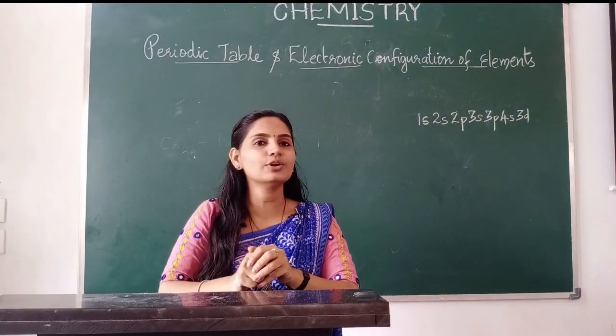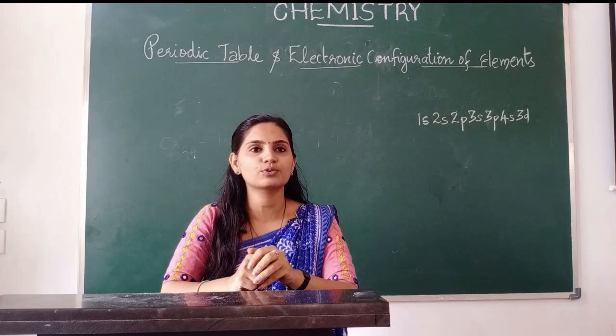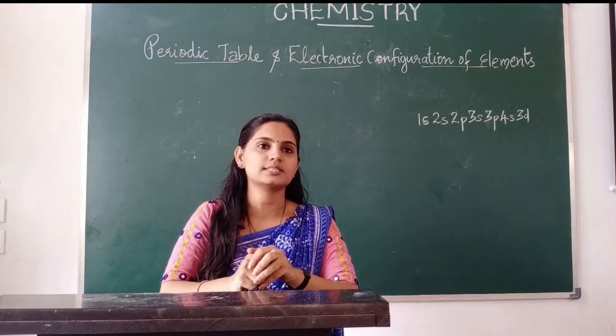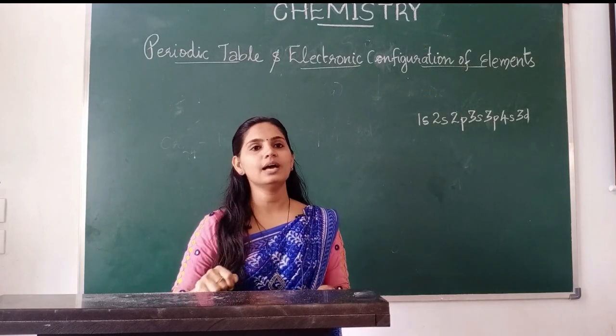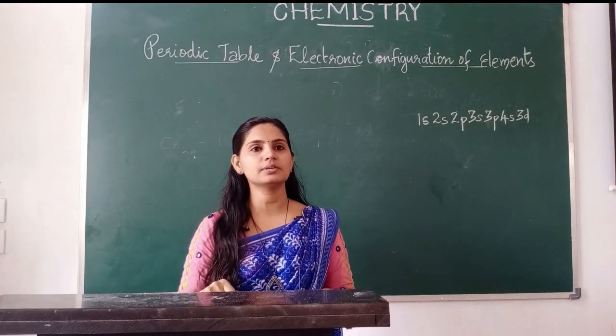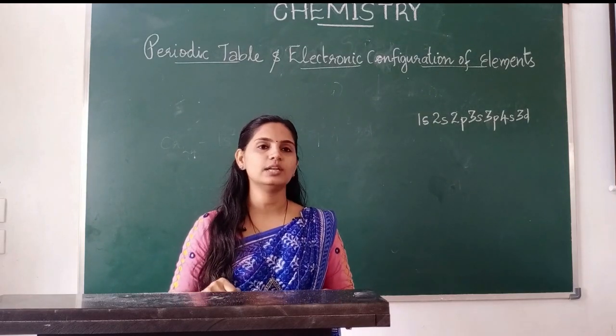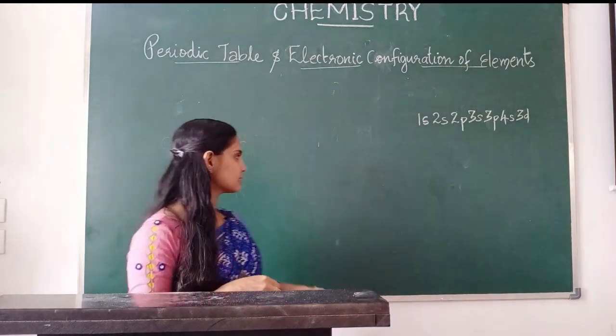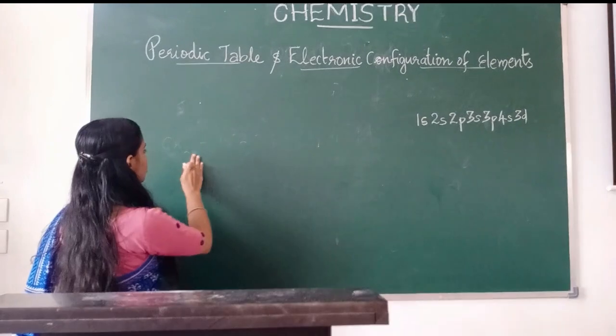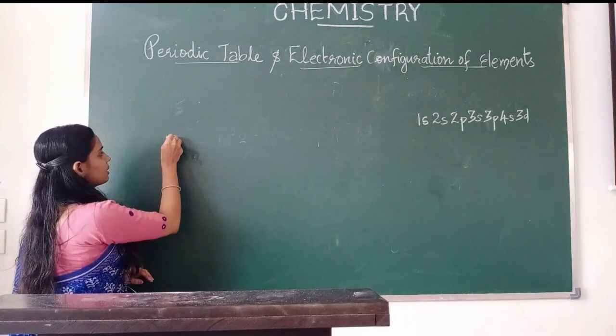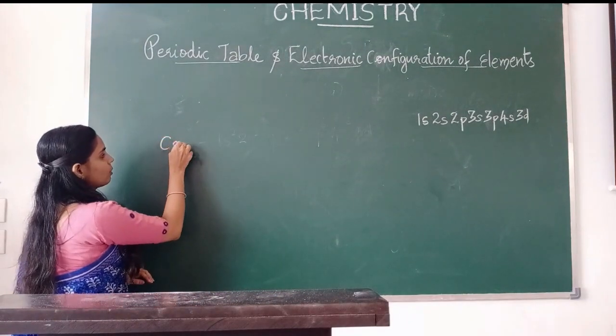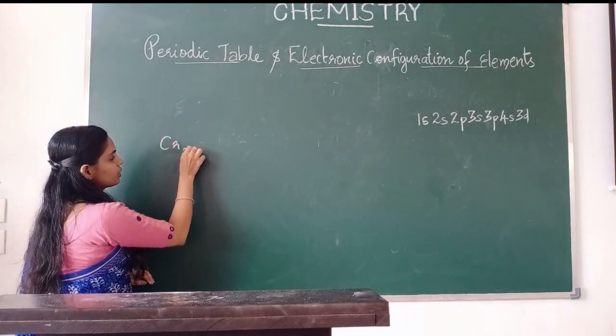Let us talk about the electronic configuration of chromium first. Chromium has atomic number 24.